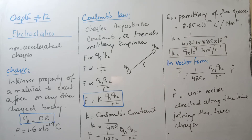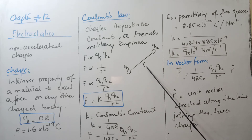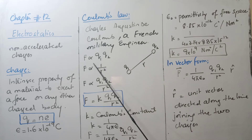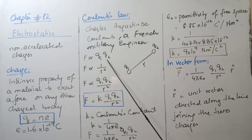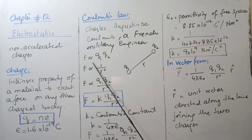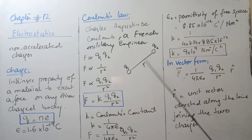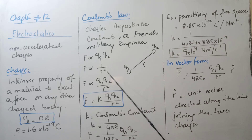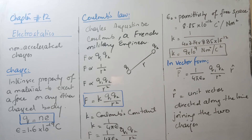Coulomb's Law. You have already read a little about this in class 9. It applies to point charges. For example, we have two point charges q1 and q2 separated by some distance r. The magnitude of the force between these two charges: first conclusion — force is directly proportional to the product of the magnitudes of the two charges. Second conclusion — force is inversely proportional to the square of the distance between them.